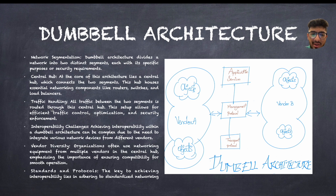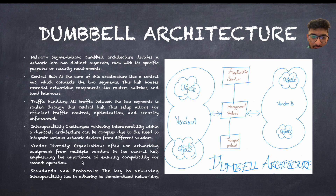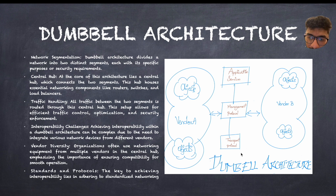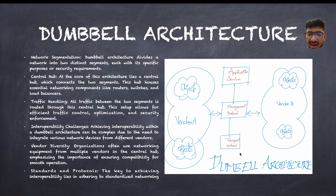Organizations often use networking from multiple vendors in the central hub, emphasizing the importance of ensuring capability for smooth operations. All of these application services, management protocols, and transport protocols can be provided by different types of vendors. So you have different types of vendors for everything.